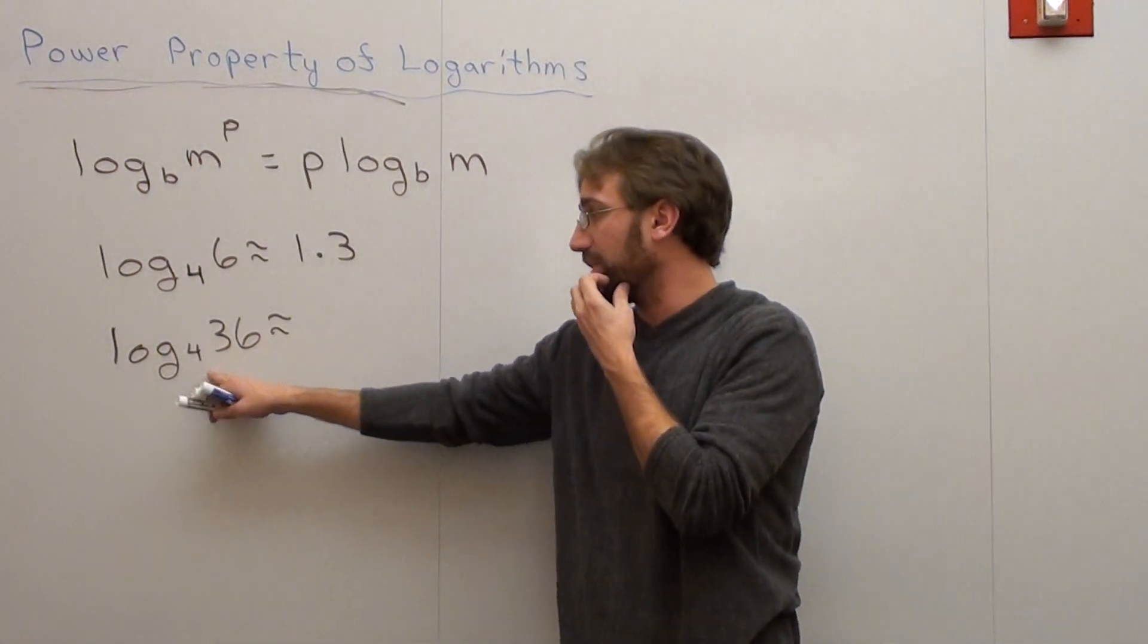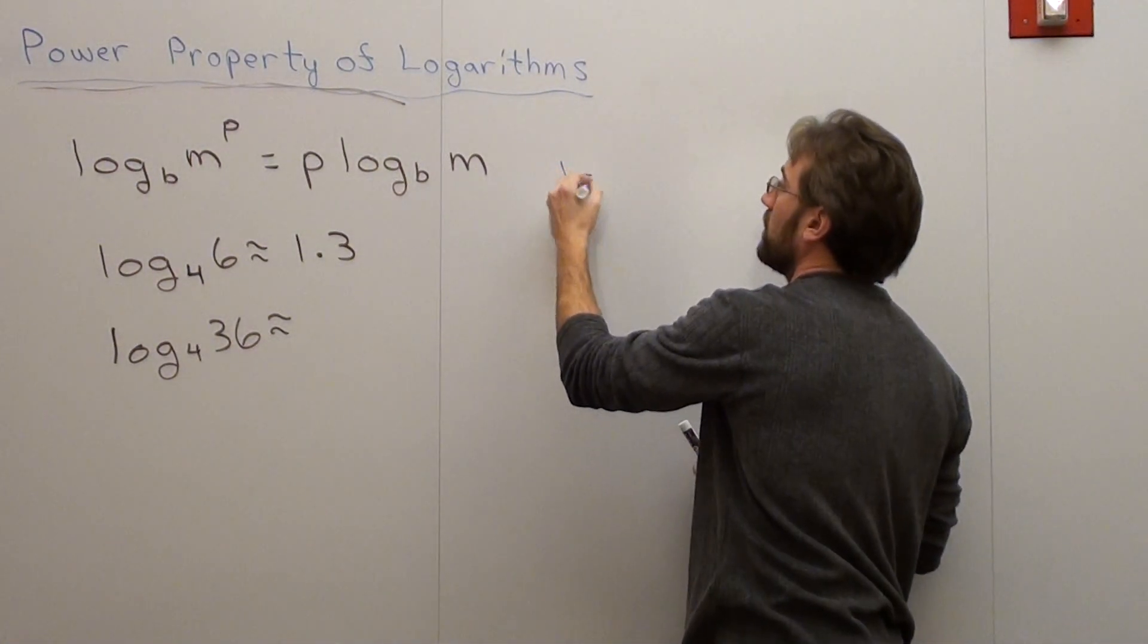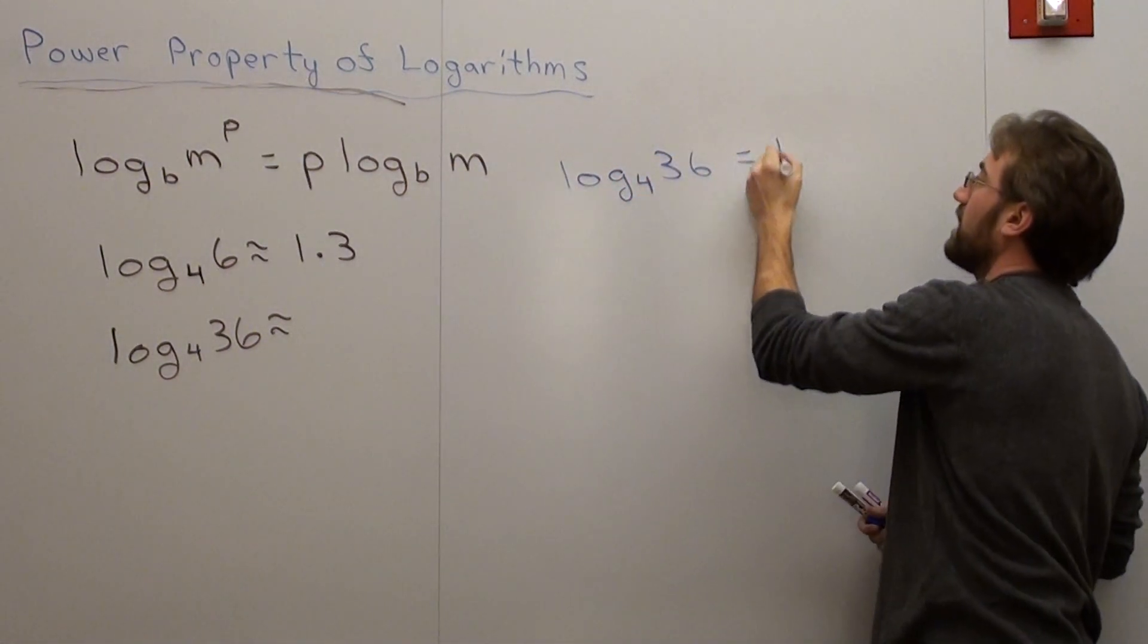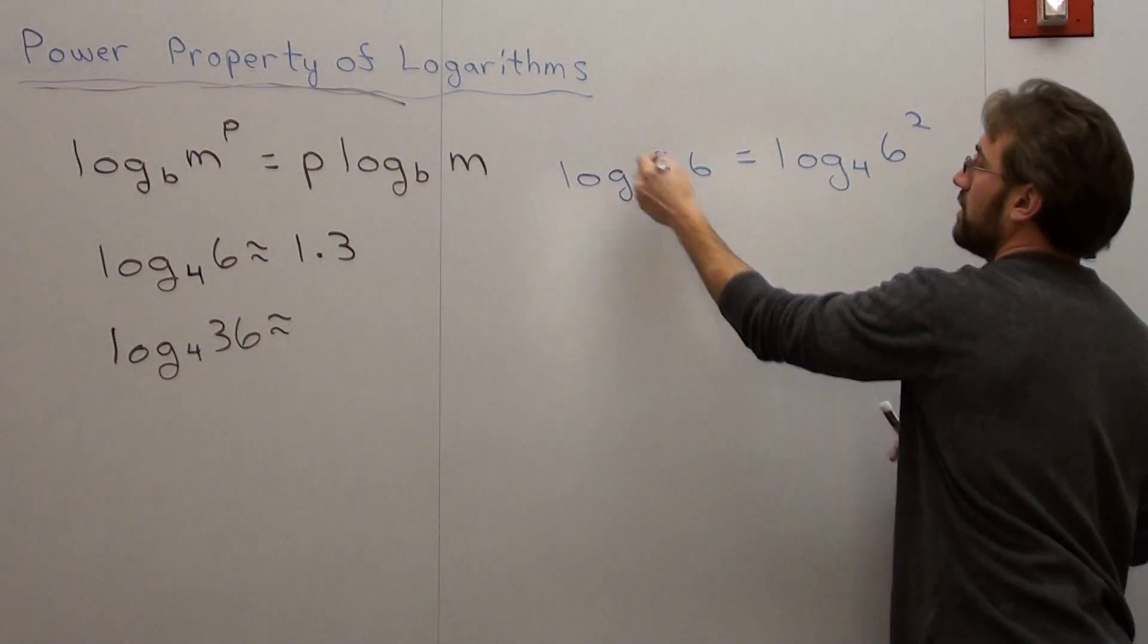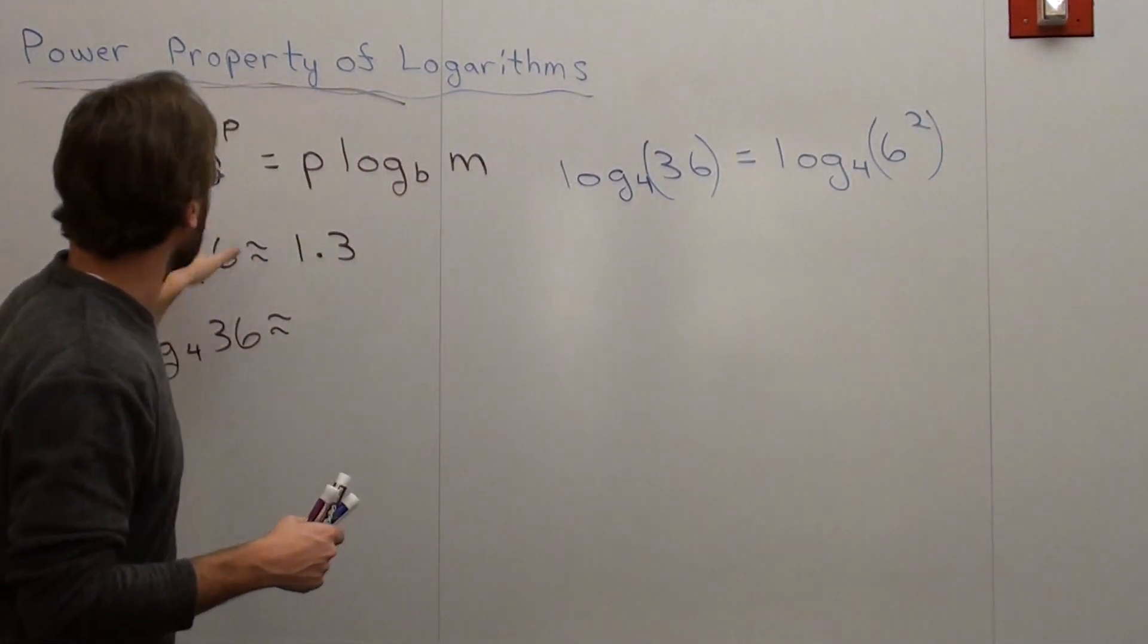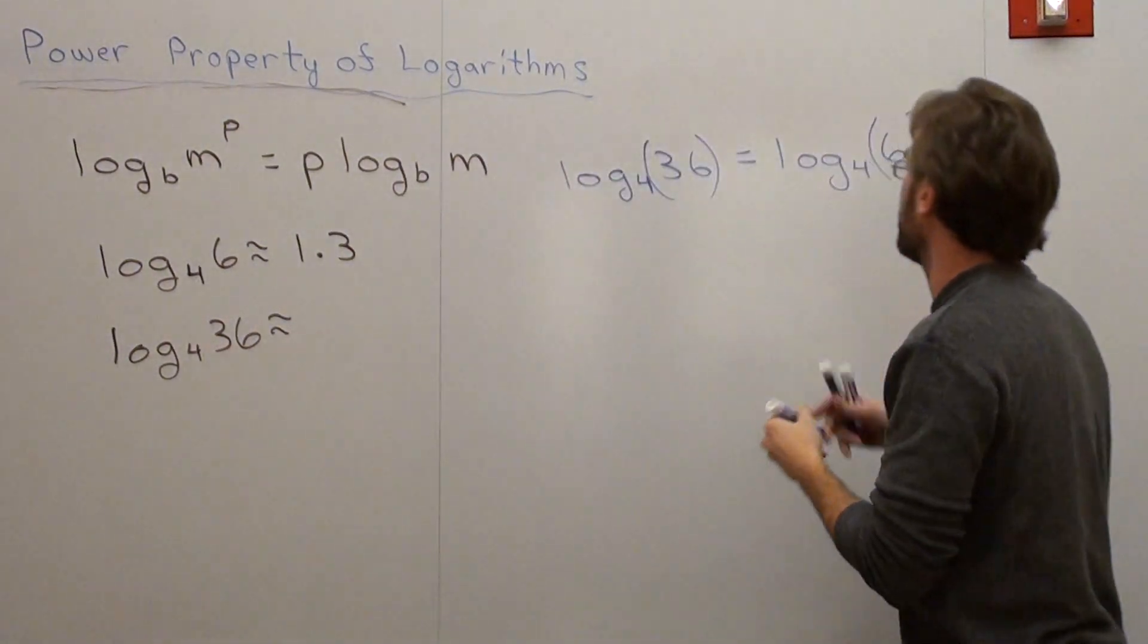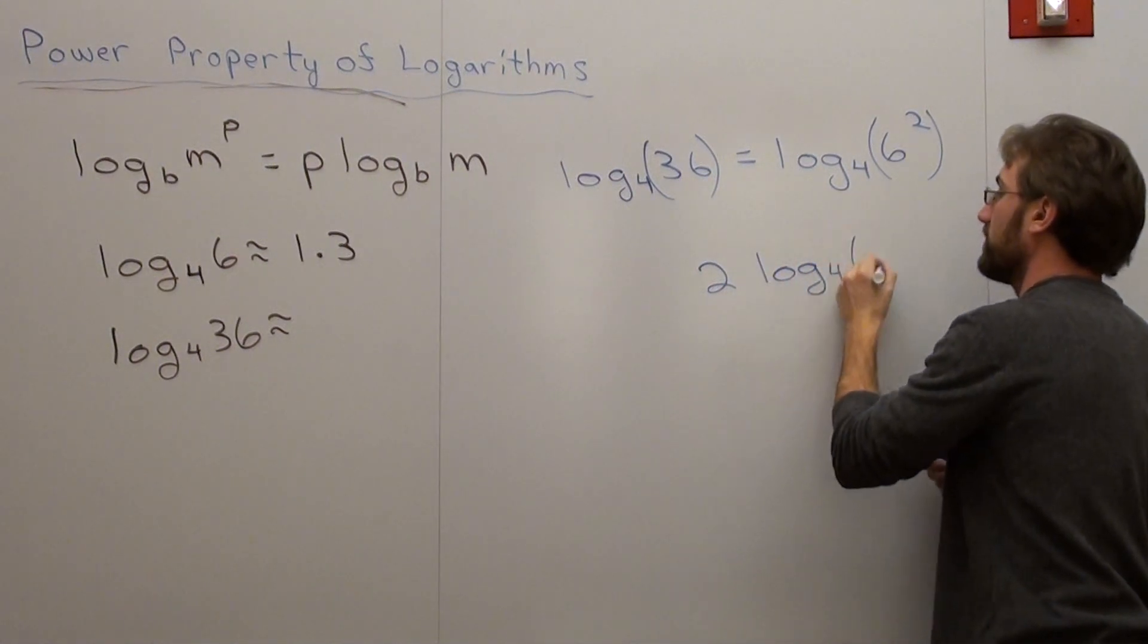So I'm going to rewrite the log base 4 of 36 as the same thing as the log base 4 of 6 squared. 36 is, in fact, 6 squared. So according to this property, what do I do with this exponent right here? Well, I throw it out in front of the log. So this is the same thing as 2 times the log base 4 of 6.